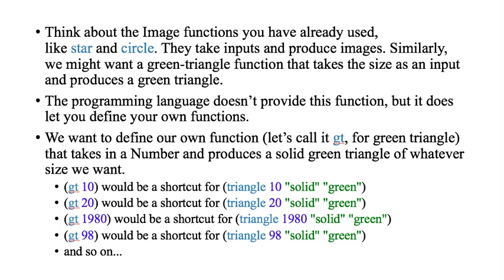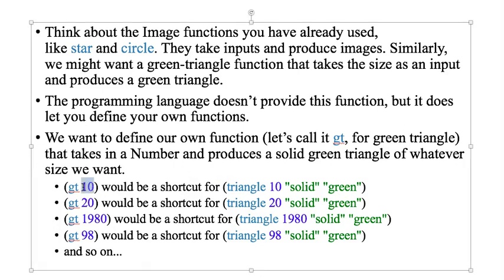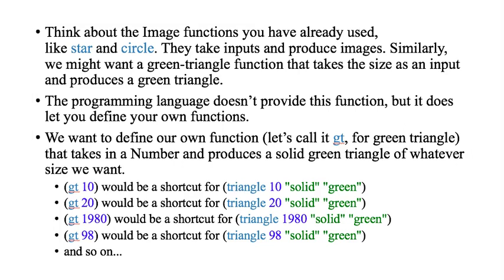So we might want a green triangle function that takes the size as an input and produces a green triangle. But the programming language doesn't provide this function, but it does let you define your own functions. So we want to define our own function, let's call it GT, for green triangle, that takes in a number and produces a solid green triangle of whatever size. So GT 10 would be a shortcut for triangle 10 solid green. GT 20, triangle 20 solid green. See how that's working? So we're going to make our own shortcut, and it's not just a define, because define they were all the same. This one actually takes in a number and then uses that number to call the triangle function.